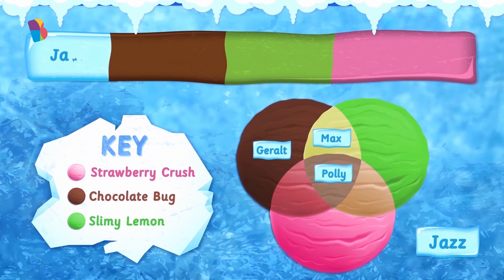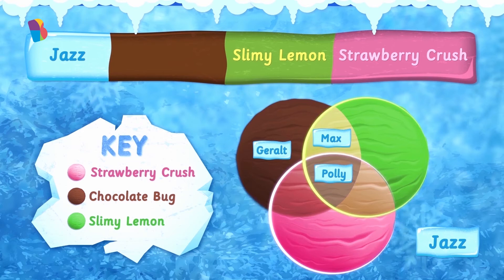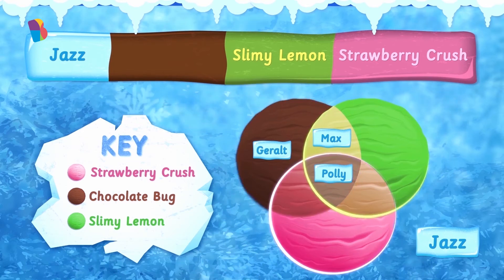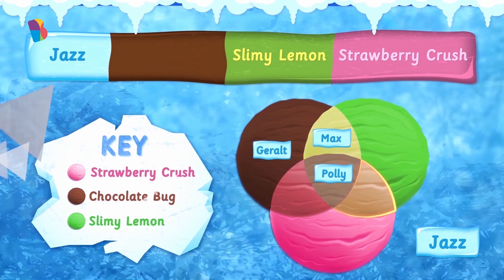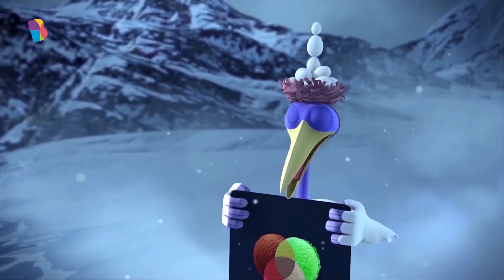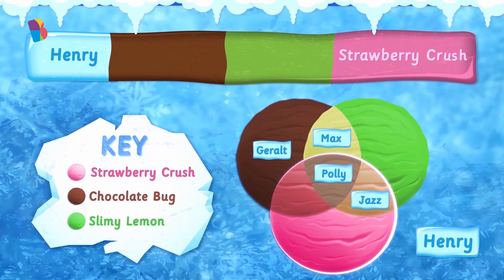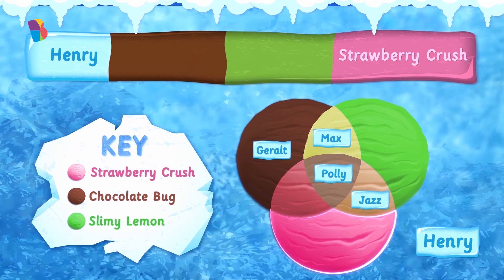Next, my friend Jazz will not have chocolate bug, but will have the other two flavors. Where should I place him? Anything but chocolate bug leaves us with strawberry crush and slimy lemon, so Jazz goes in the overlapping part of the pink and lime green circles. My friend Henry loves only strawberry crush. Where should I place him? Yes, Henry goes into the part of the pink circle which is just pink. No overlapping parts should be included.